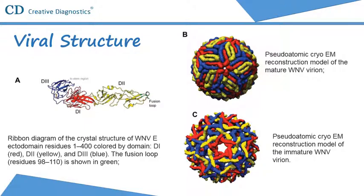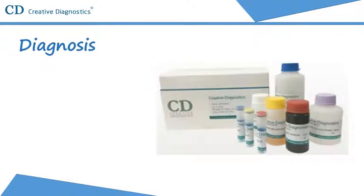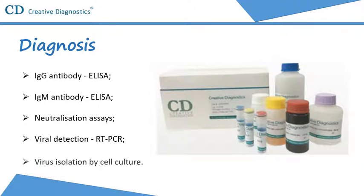West Nile virus can be diagnosed by a number of different tests, including: IgG antibody seroconversion or significant increase in antibody titers in two serial specimens collected at a one-week interval by enzyme-linked immunosorbent assay (ELISA); IgM antibody capture ELISA; neutralization assays; viral detection by reverse transcription polymerase chain reaction (RT-PCR); and virus isolation by cell culture.